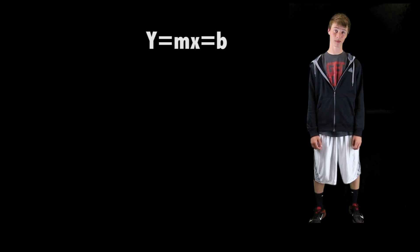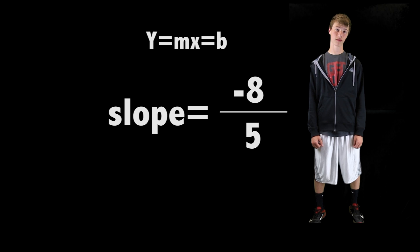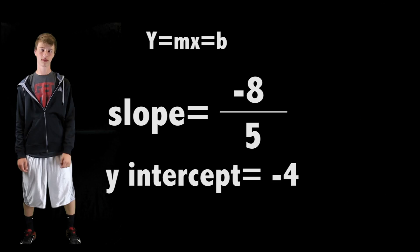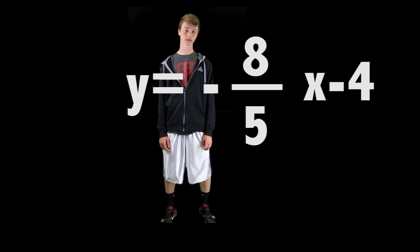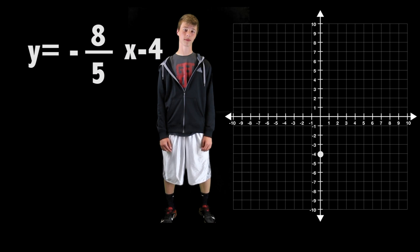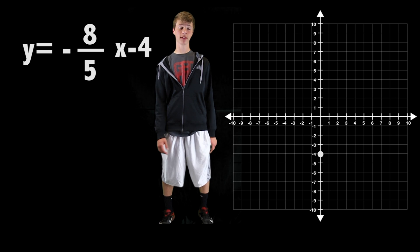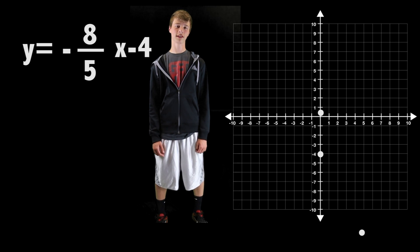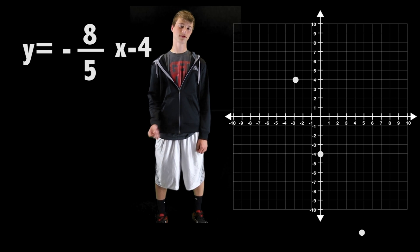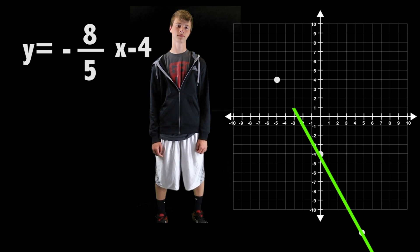Now we need a random problem. The slope is negative 8 over 5, and the y-intercept is negative 4. Then we need to order that. Now we need to graph negative 4 on the y-intercept. Now we need to take our slope, go eight spaces down and five spaces to the right. Or you could just go eight spaces up and five spaces to the left. Now we're good.